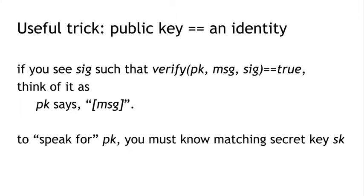For someone to speak for PK — that is, for someone to make statements seen as coming out of PK's mouth — you have to know the matching secret key SK. If you know the secret key corresponding to the public key PK, you can sign messages with that secret key, making statements on behalf of that public key. That means there is an identity in the system which only you can speak for, something one person can speak for on behalf of, that everybody can see.